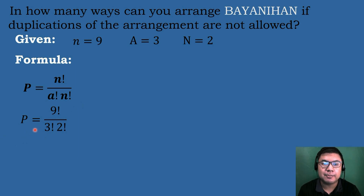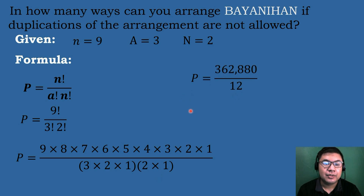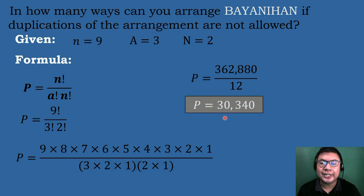Substituting the values: P equals 9 factorial over 3 factorial times 2 factorial. 9 factorial equals 362,880. The denominator is 3 times 2 times 1, which is 6, times 2 times 1, which is 2, so 6 times 2 equals 12. Dividing 362,880 by 12 equals 30,340.